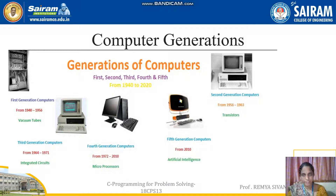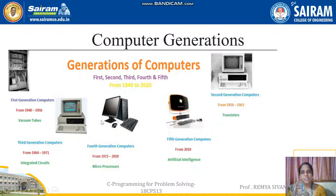Before going into computer components in detail, let us see what computer generations are. There are five generations from 1942 to 2020. The first generation is from 1940 to 1956, the second from 1956 to 1963, the third from 1964 to 1971, the fourth from 1972 to 2010, and the fifth or current generation from 2010 onwards. These generations differ based on the technology used to build the computers of that era.